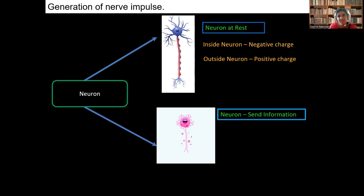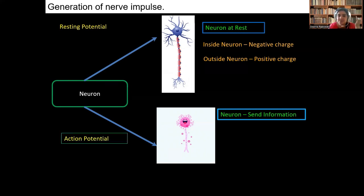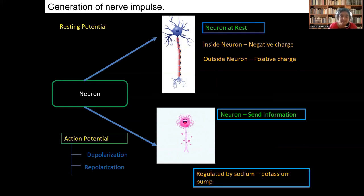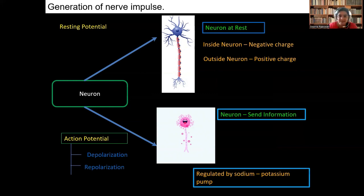When the neuron is at rest, it will be normally negative in charge inside, and outside of the neuron it will be positive — this means it is at the resting stage. When the action potential is generated because of the stimulus, there occurs depolarization as well as repolarization of the neuron. Then it will be sending the information, and this entire generation of the nerve impulse is mainly regulated by the sodium and the potassium ions.